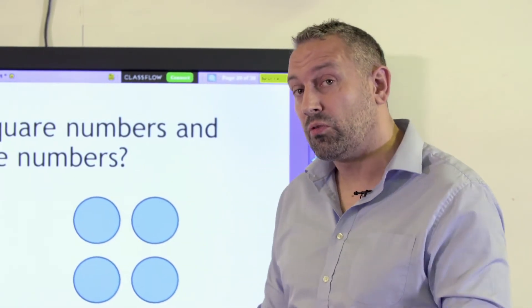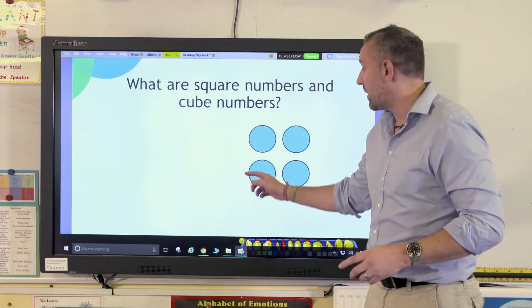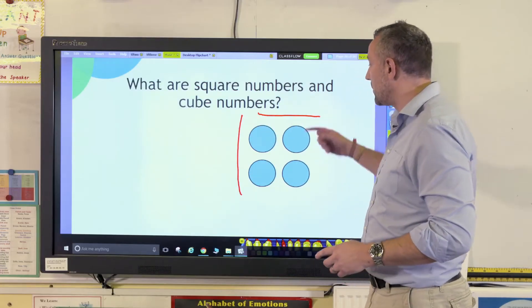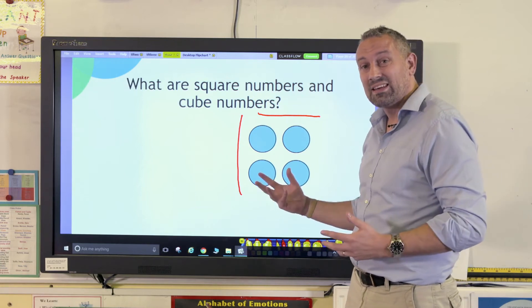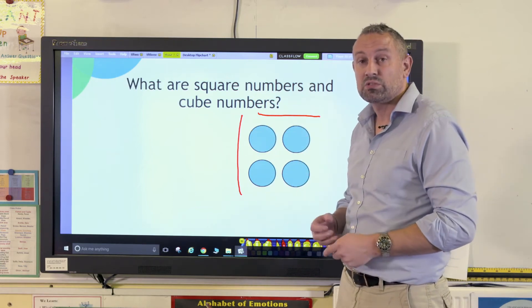That's really helpful for when we move from the concrete to the pictorial. Here we have 2 by 2, which is 4, and again we're dealing with those two dimensions and the square shape. 2 times 2 is 4.